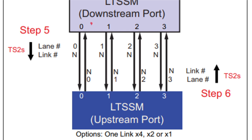Now, the downstream port needs to configure the link width. What is the link width? The downstream port will not configure any link width. Because the 0th lane itself is not working, and the link width needs to be configured starting from the 0th lane. Since lane 0 is not working, the downstream port will not configure any link width.